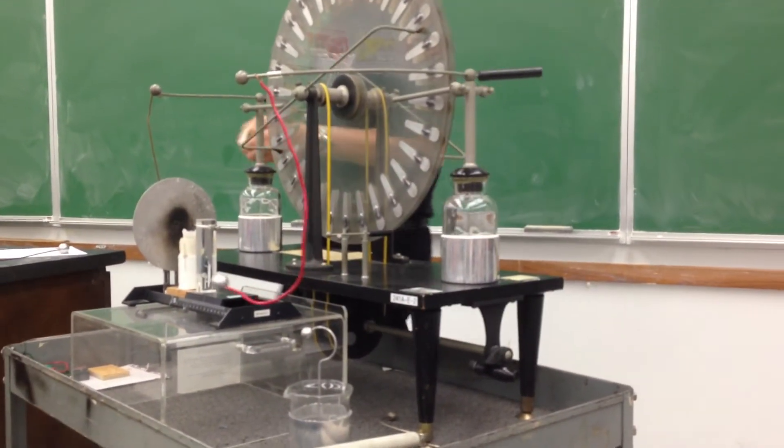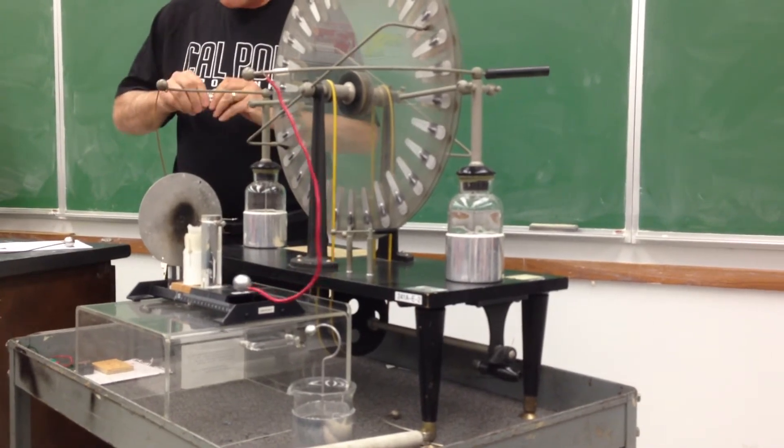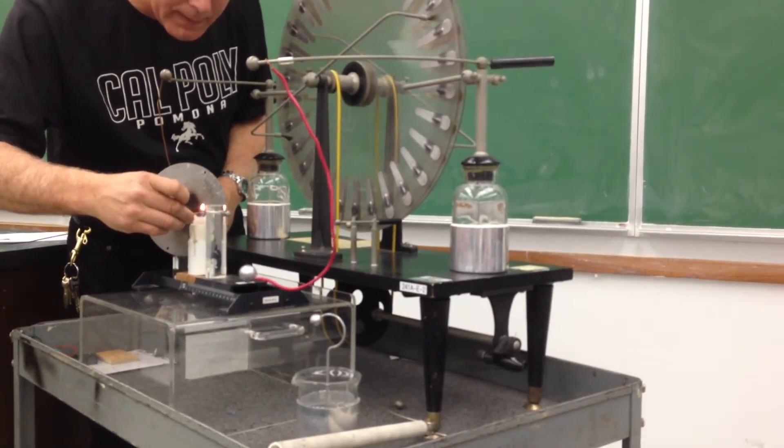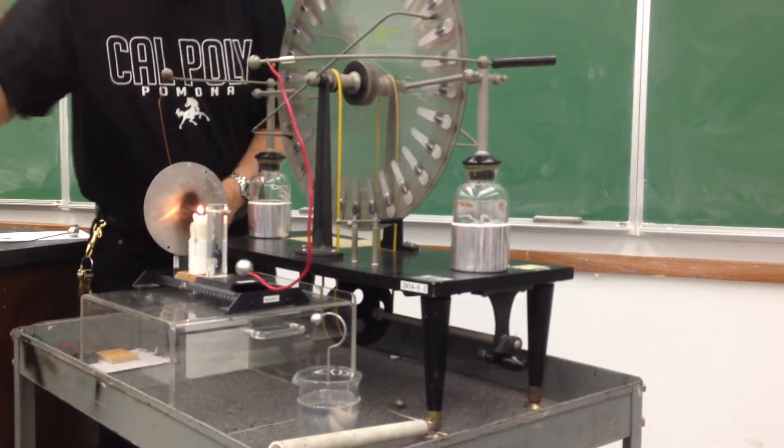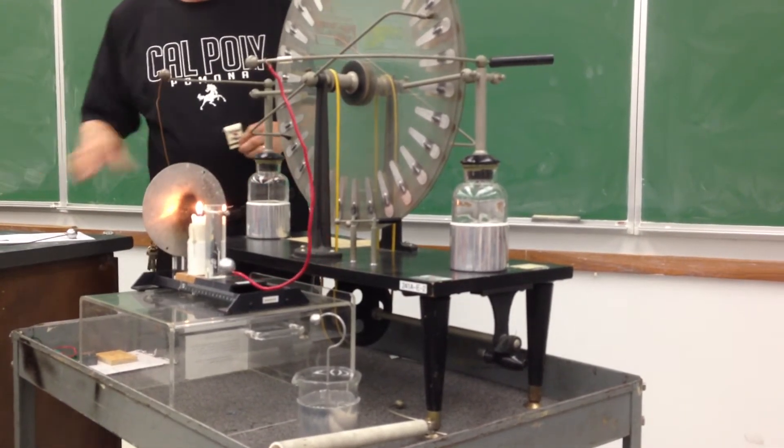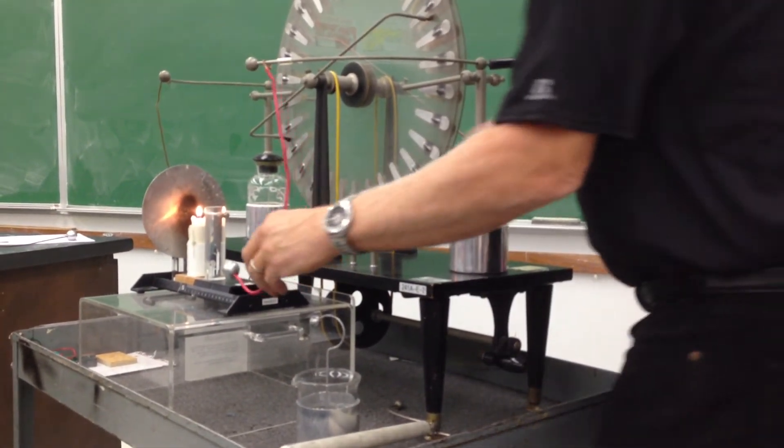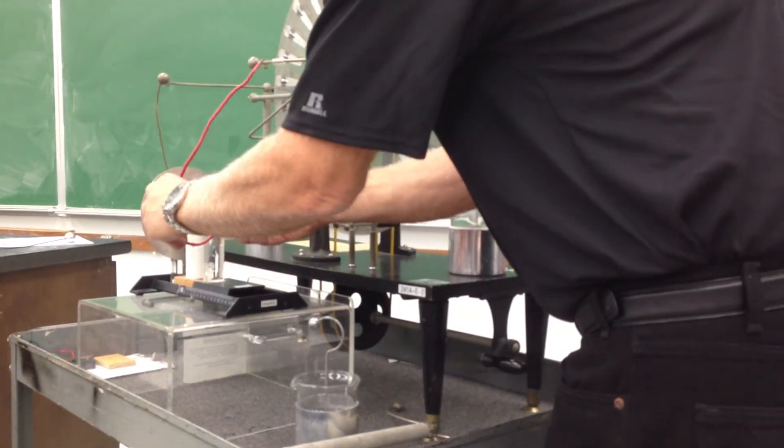What we're going to do is charge that plate with a negative charge, and that's going to attract the plasma of the candle flame. It will look like a wind blowing the candle—that's if I can get this other side here to connect.